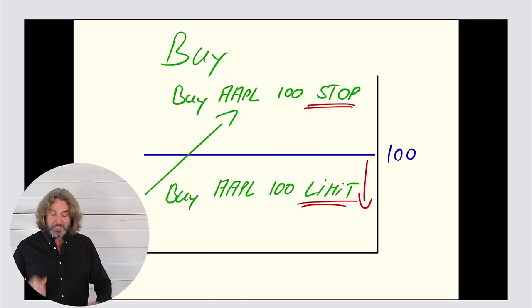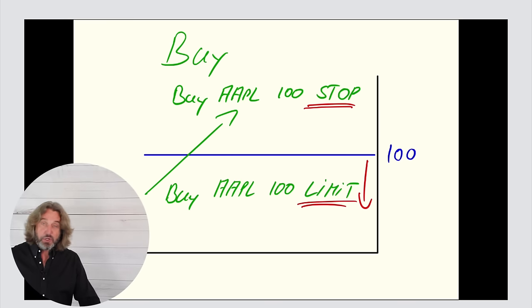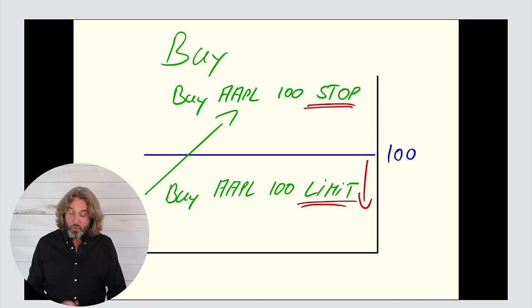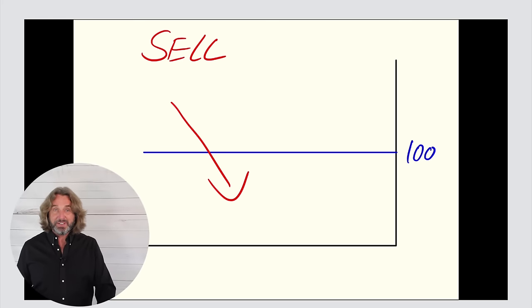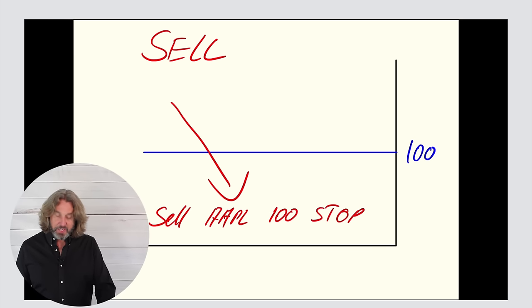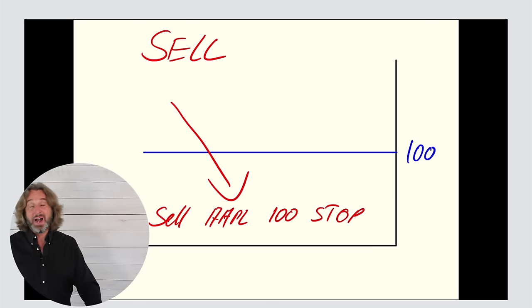Again, when you're buying and you specify 100 stop, you're buying when it moves above. When you're selling and you're betting on a falling market, if you say sell AAPL at 100 stop, it means that you're selling it as soon as it goes below a hundred dollars.